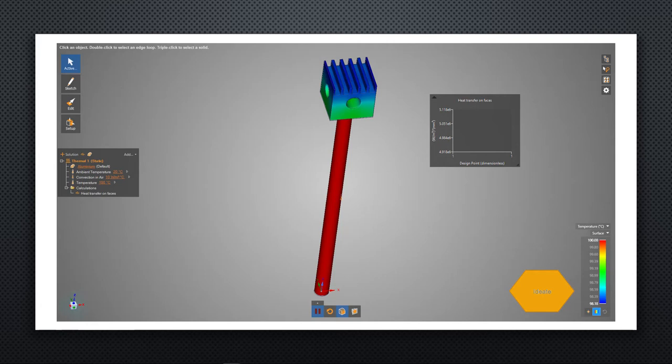Next, students are guided through the process of creating a thermal solution for the design. For the analysis, the rod, which is assumed to be in a boiling hot drink, is held at 100 degrees Celsius. The structure on top is allowed to transfer heat via convection to the surrounding air. The temperature of the air and rate of convection can both be adjusted if desired, but since students are just comparing the effectiveness of different designs and not trying to make quantitative predictions, this isn't necessary.